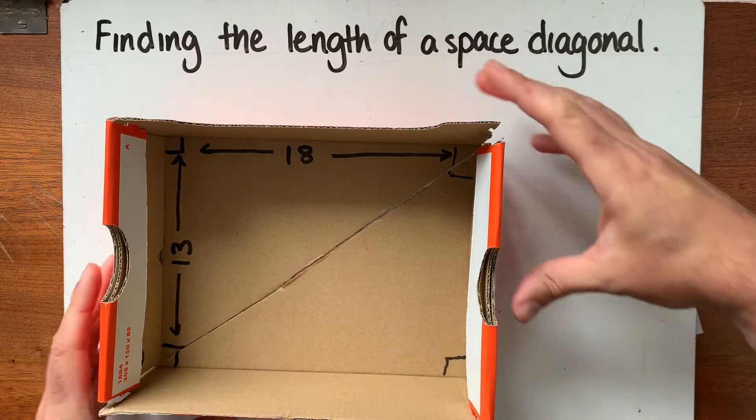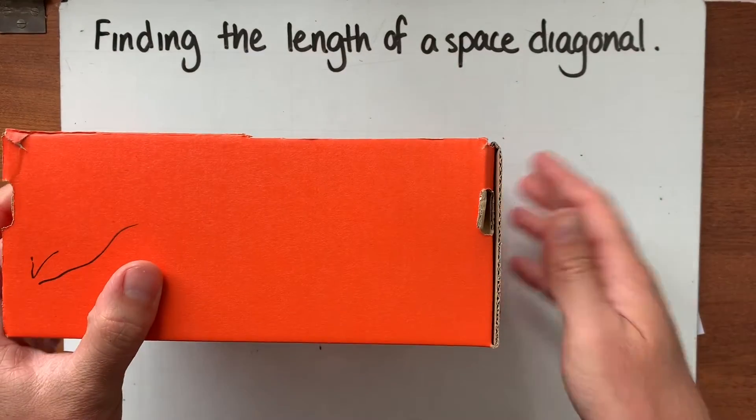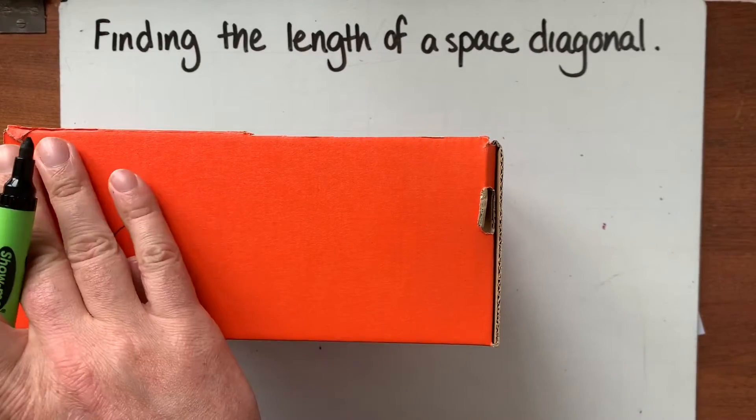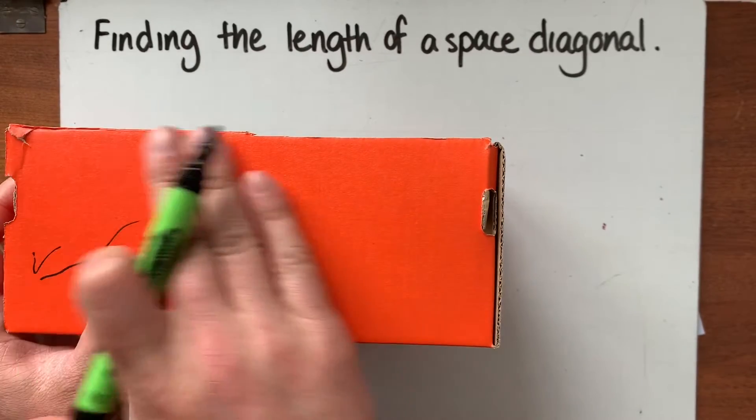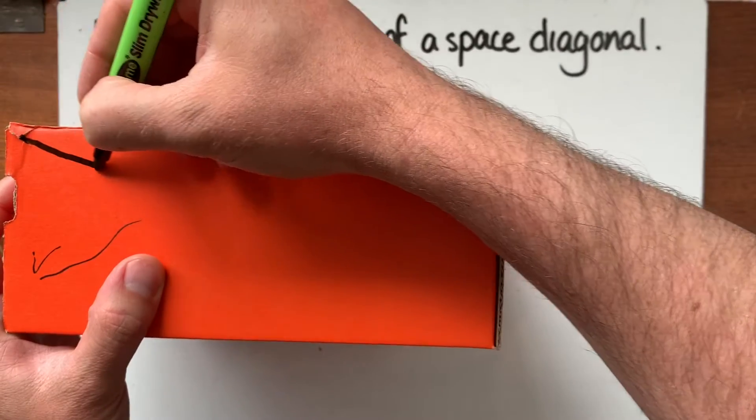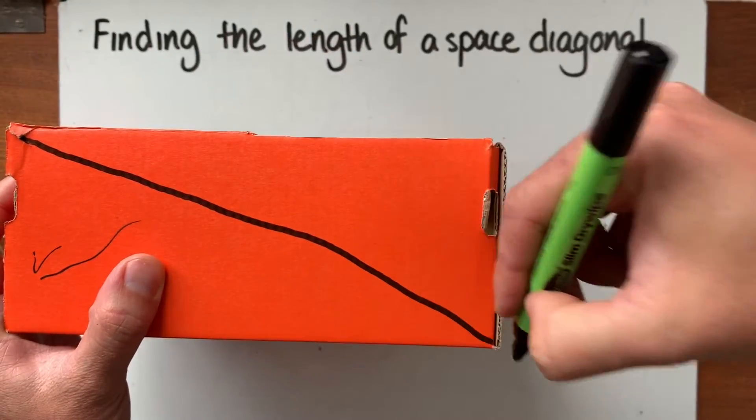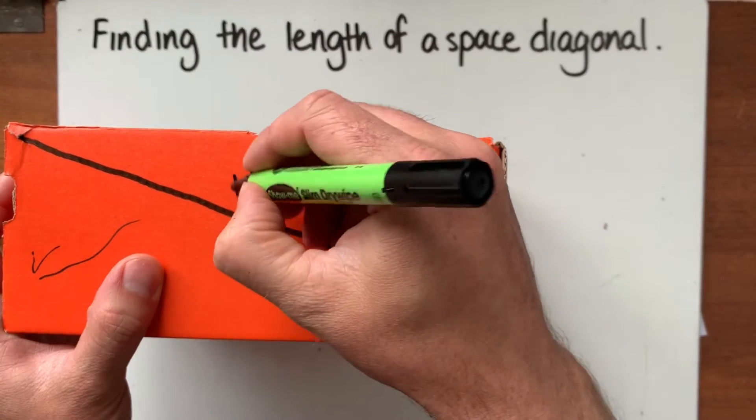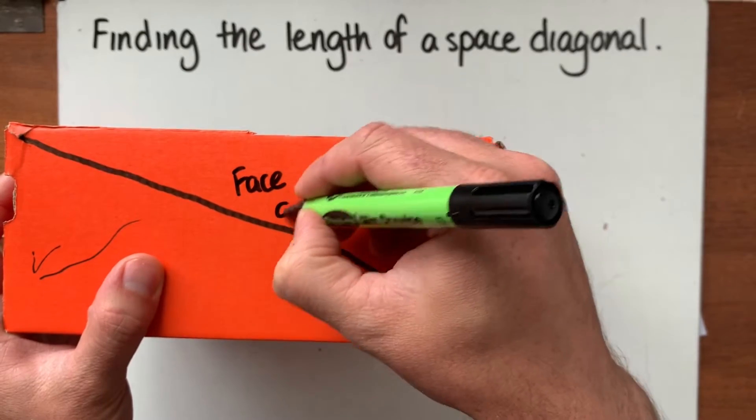Now if we go to two dimensions first of all, if I maybe take this face here then a face diagonal would be based in two dimensions. So we've got a face of our cuboid and the diagonals go from one corner to the diagonally opposite corner. That's what we would call a face diagonal.